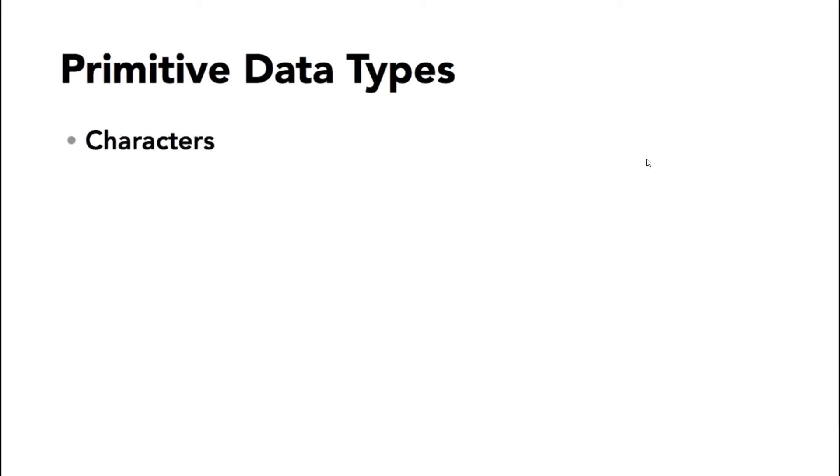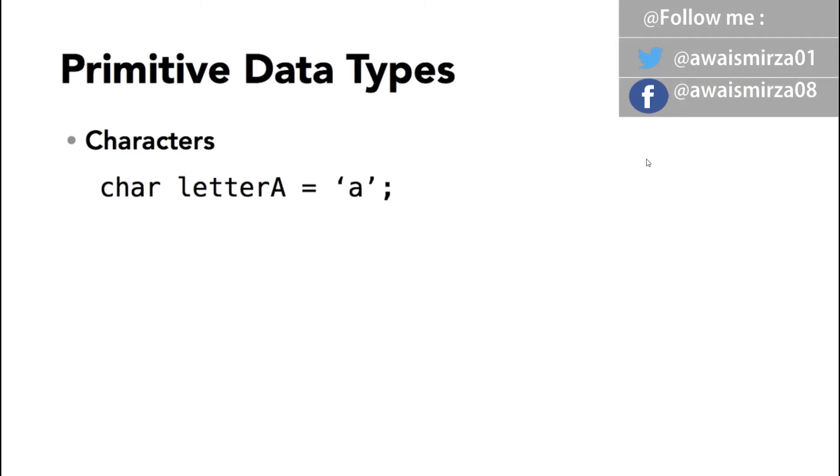The first is character. The character data type allows us to store a single character, a single number, or a symbol. The syntax in Java is char. A variable name such as letterA equals single quote A, single quote, semicolon. Take particular notice of the single quote. This is different than the literal or string we have used before that had double quotes.